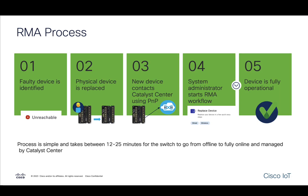Let's talk about the RMA process. The first step is the device becomes unreachable, and an operator learns about that through a Catalyst Center alert or through the dashboard, and marks the device for replacement. Someone on-site will take the old device out, put the new device in, and replace the cable. When the new switch boots, it will contact Catalyst Center through the plug-and-play process.